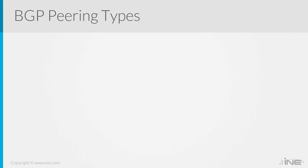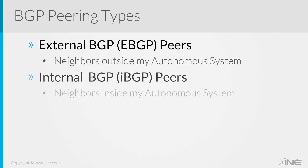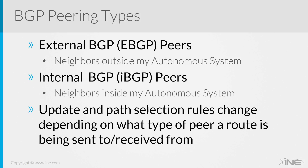For BGP peering types, you have external BGP — neighbors outside of my autonomous system — and internal BGP peers — neighbors inside my autonomous system. Update and path selection rules change depending on what type of peer a route is being sent to or received from. I'm going to set it up step-by-step so you'll see next-hop processing and how to set it correctly, and then voila — things will start to work.